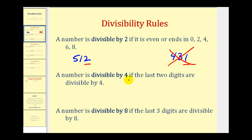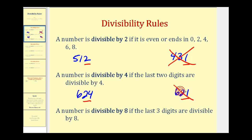A number is divisible by 4 if the last 2 digits are divisible by 4. If we take a look at 624 and 621, we're only concerned about the last 2 digits — 24 and 21. Well, 24 is divisible by 4, and therefore so is 624. But 21 is not divisible by 4, and therefore 621 is not divisible by 4.